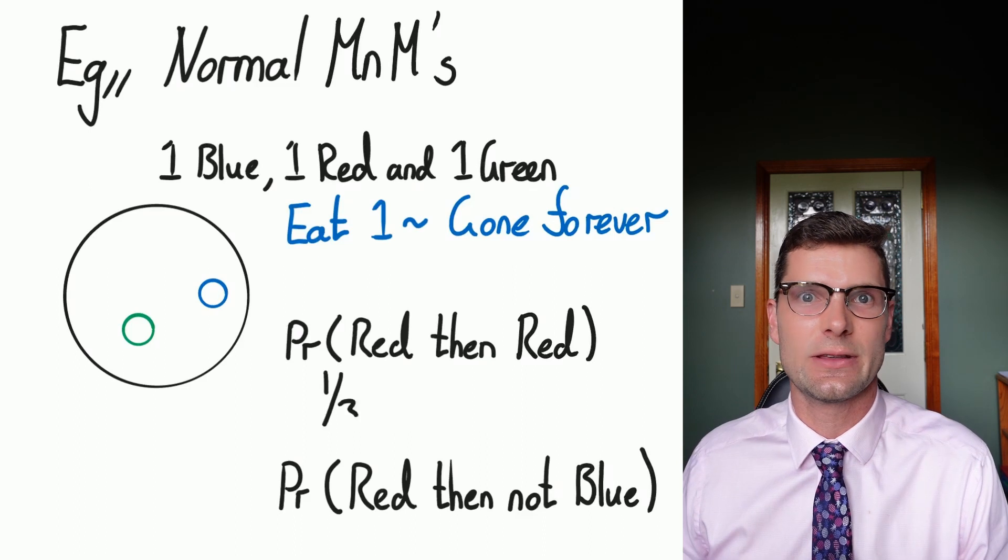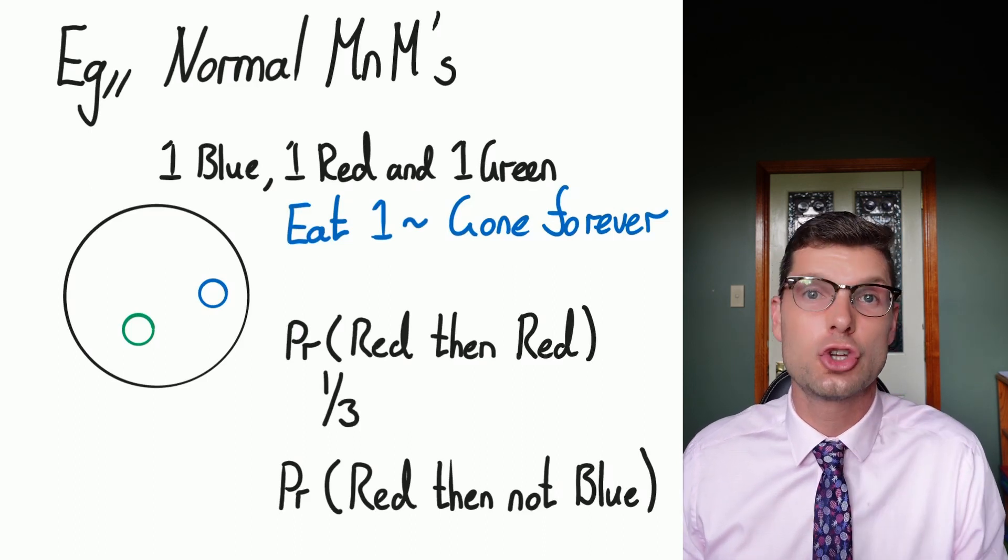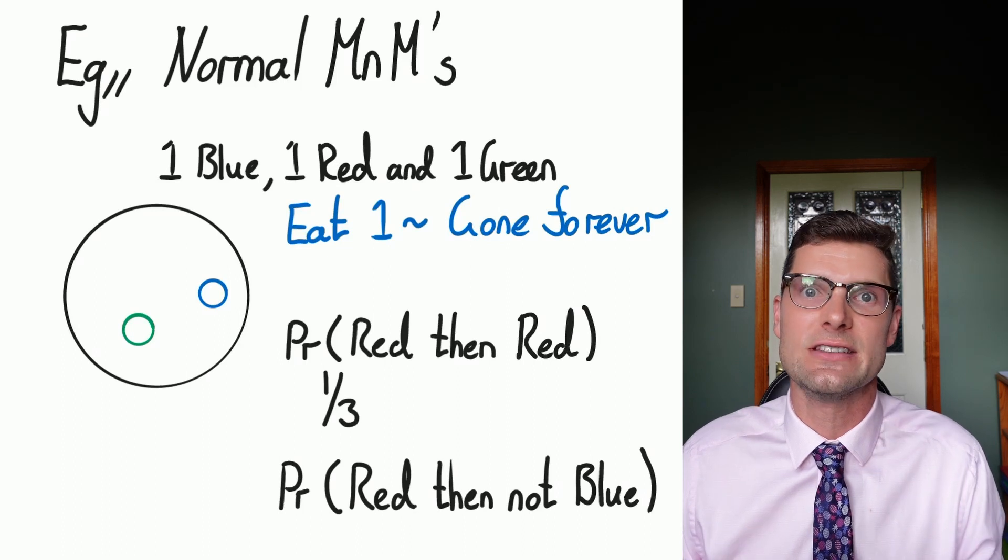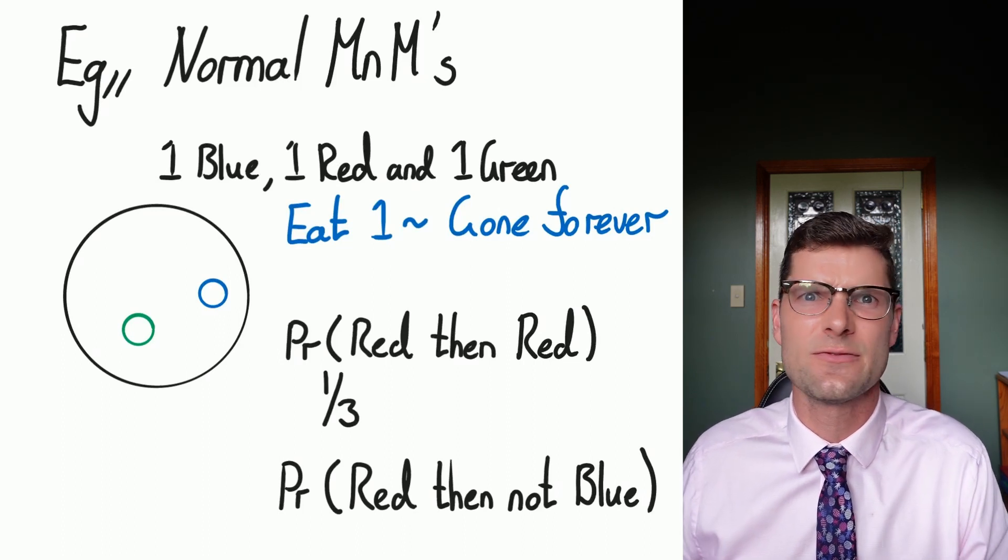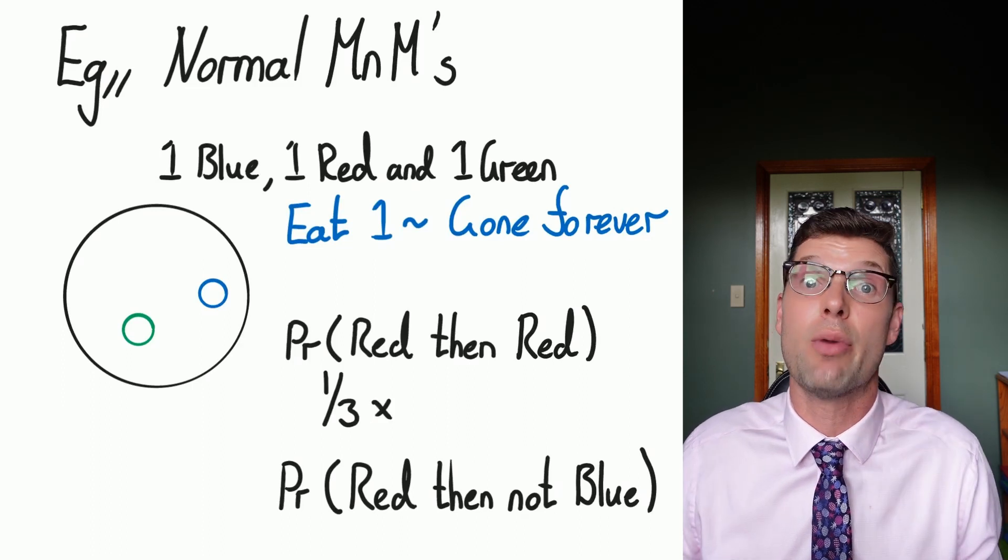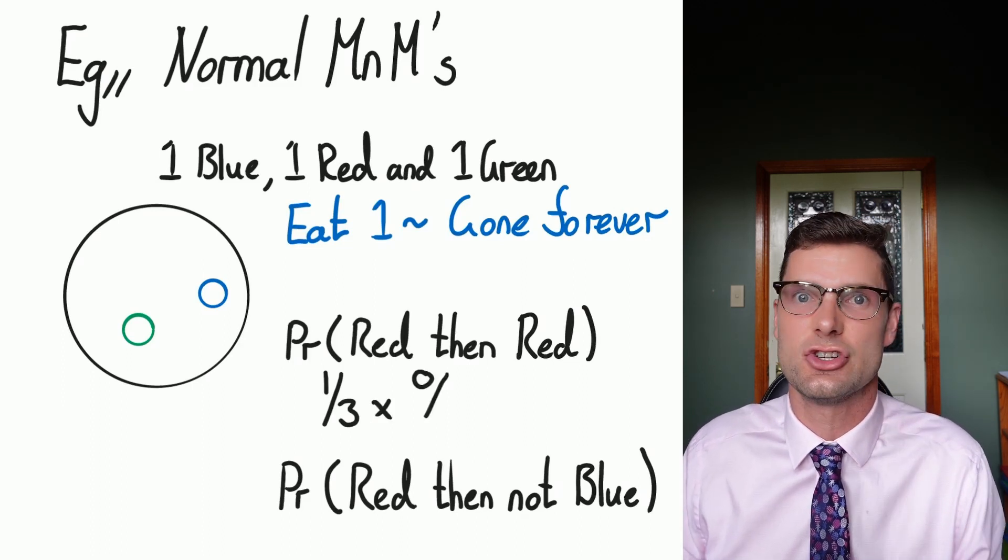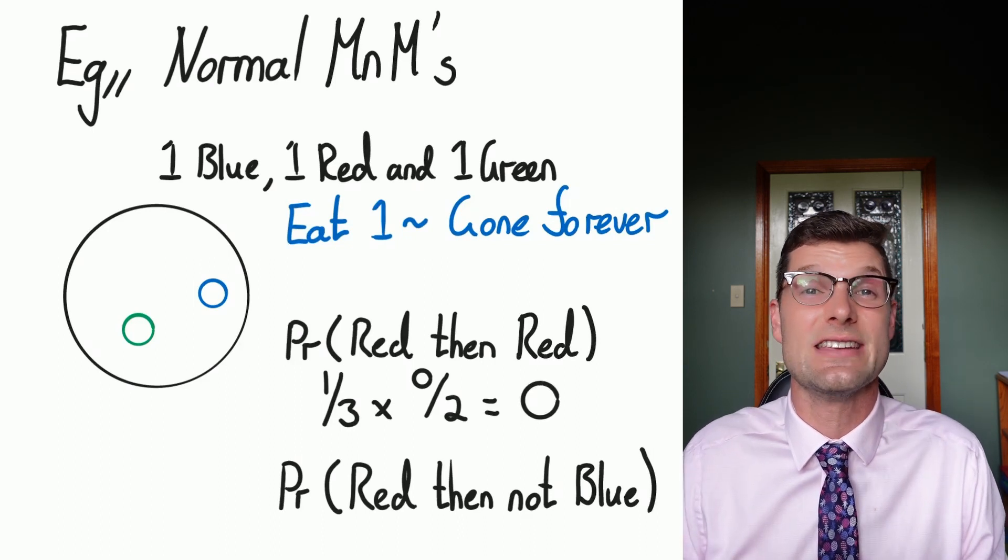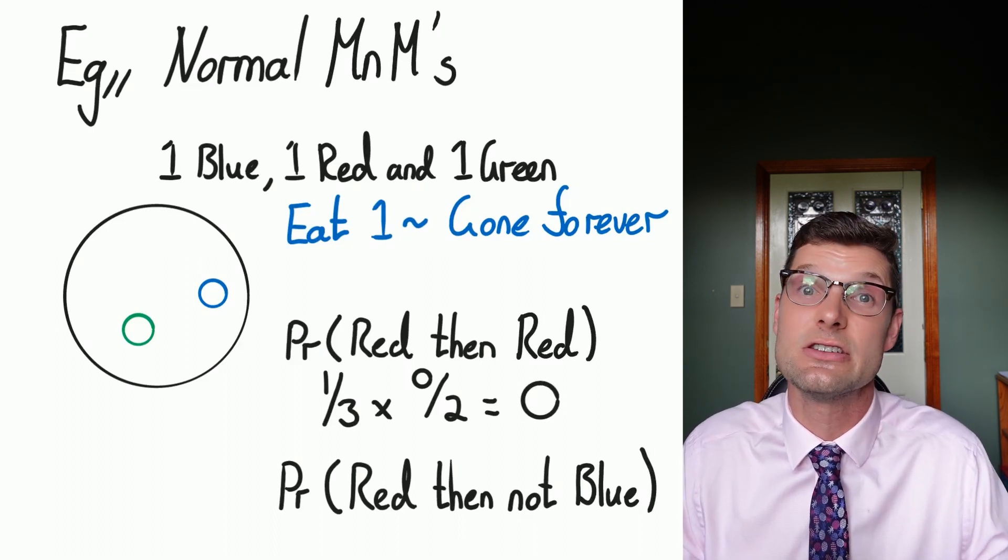So if I eat that red one, I've got a one out of three chance for doing that. And now there are only two options for my sample space for the second step of this experiment. What's the chance of me getting a red out of a blue and a green? Well, it's zero divided by two. So the sample space has changed. We know that this equals zero. So this situation is impossible because there is no replacement. Once it's gone, it's gone.